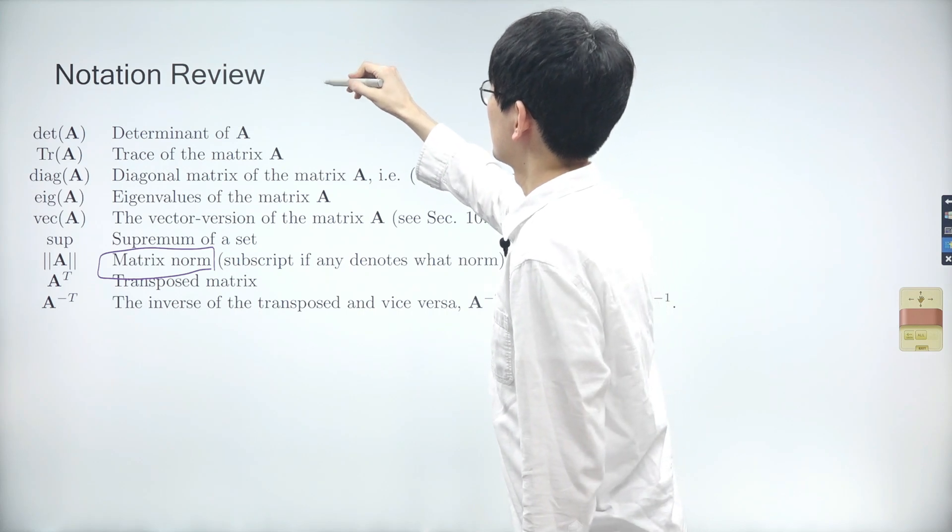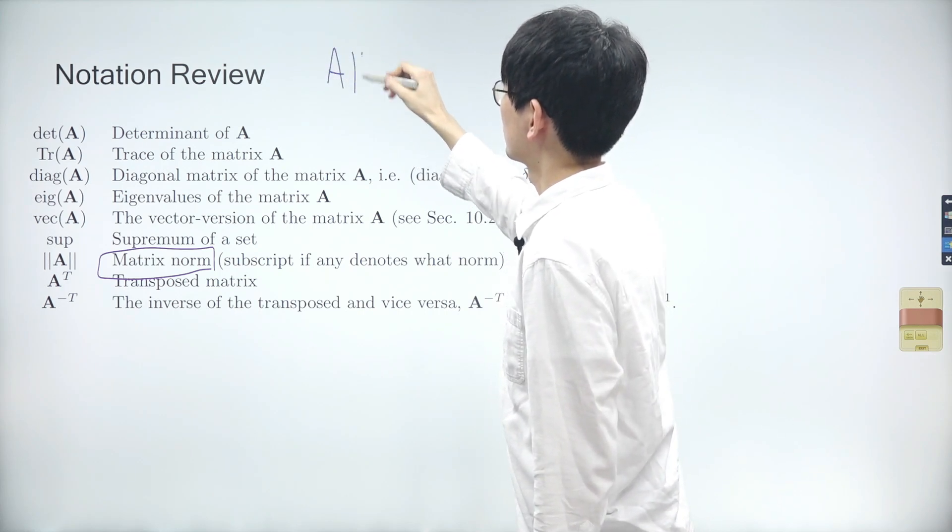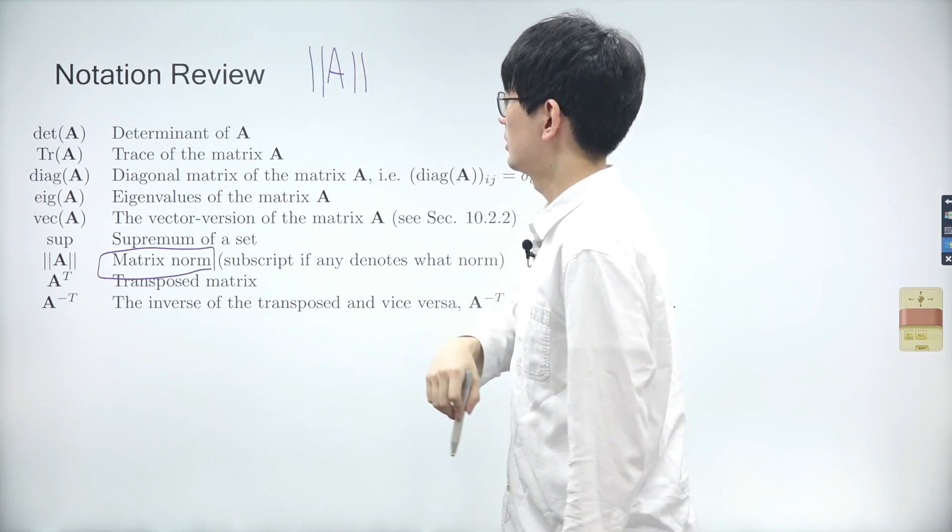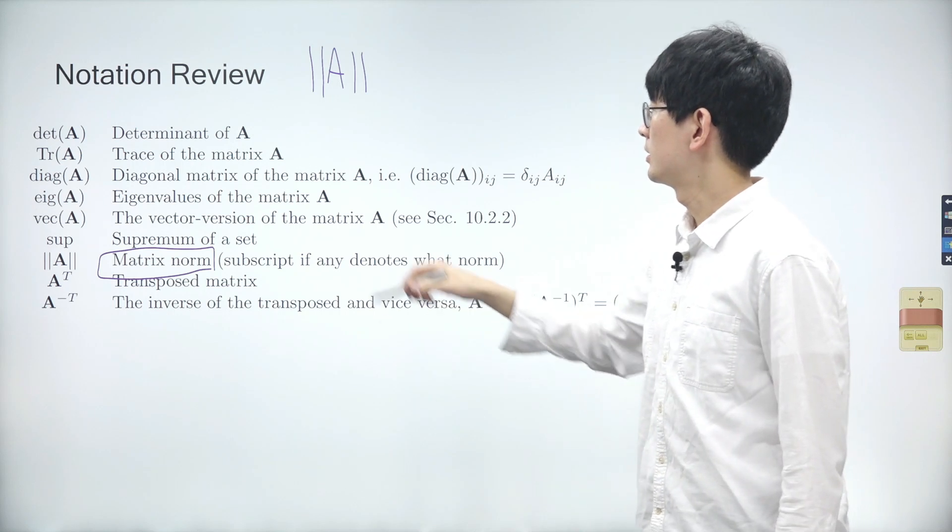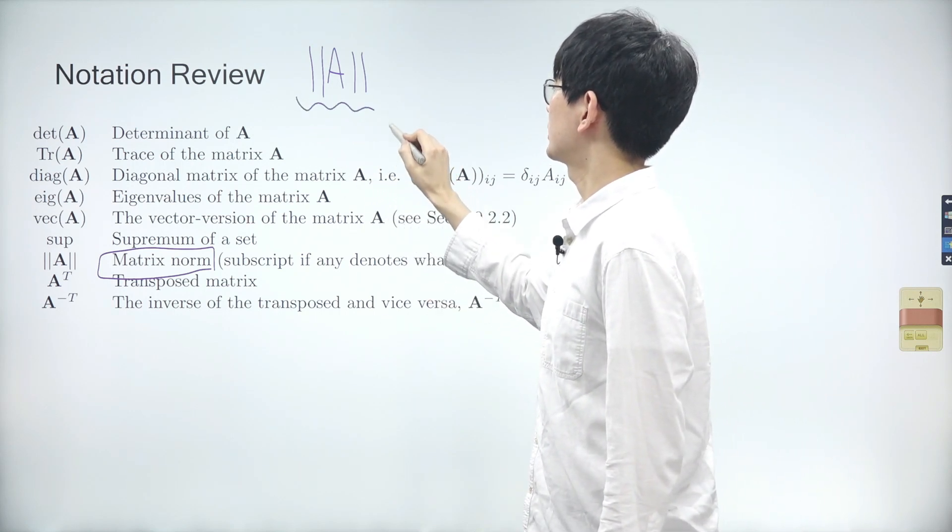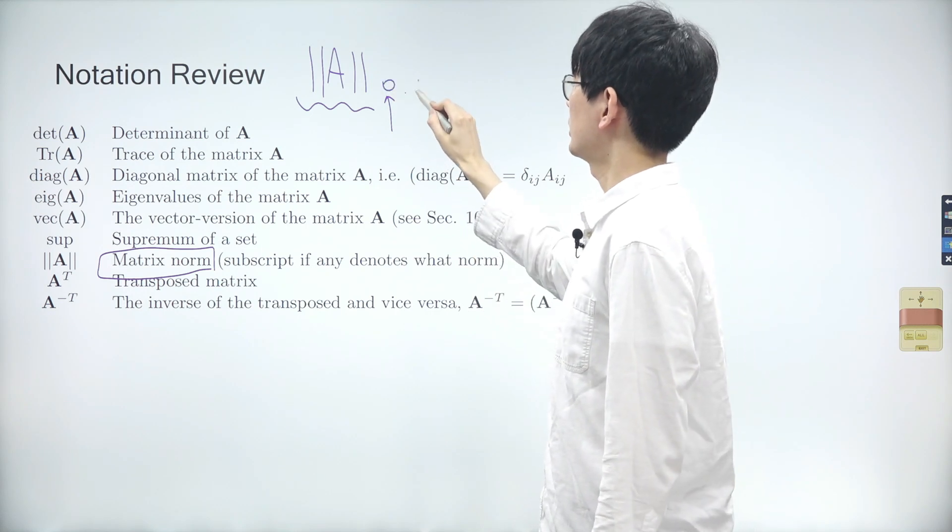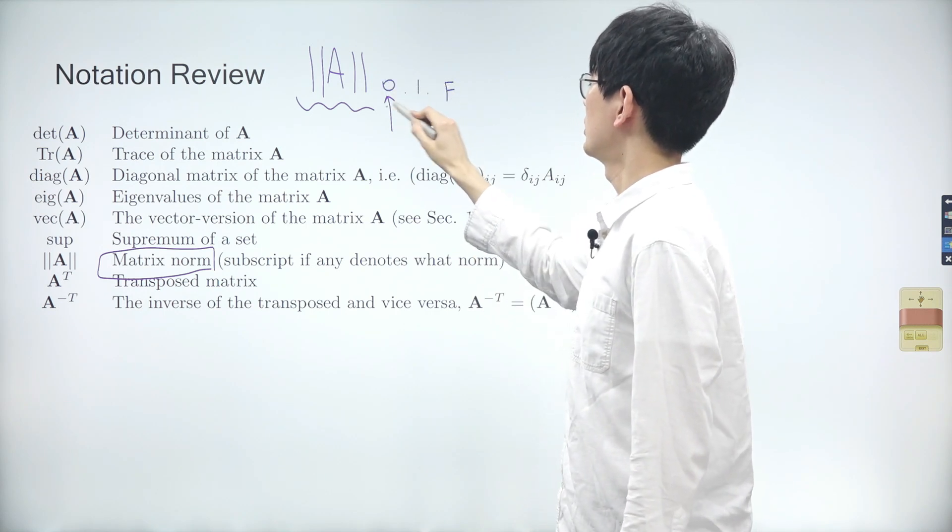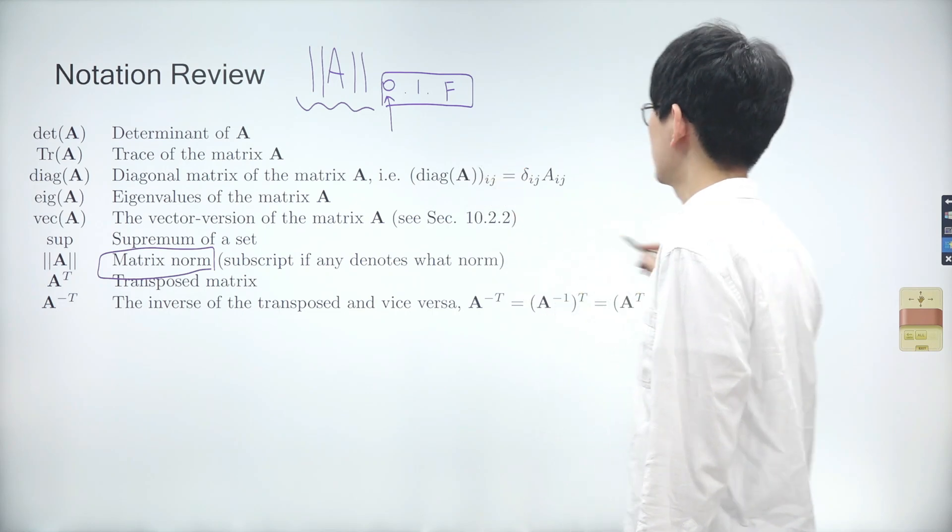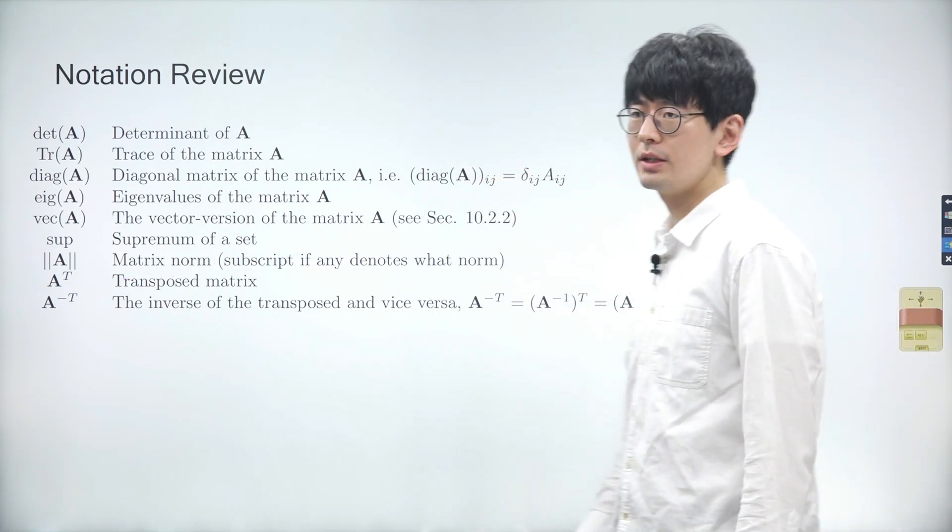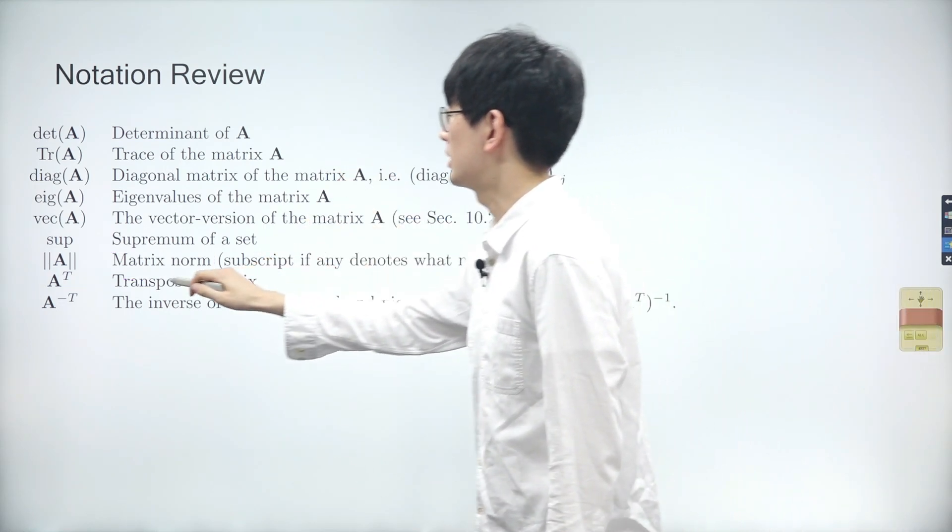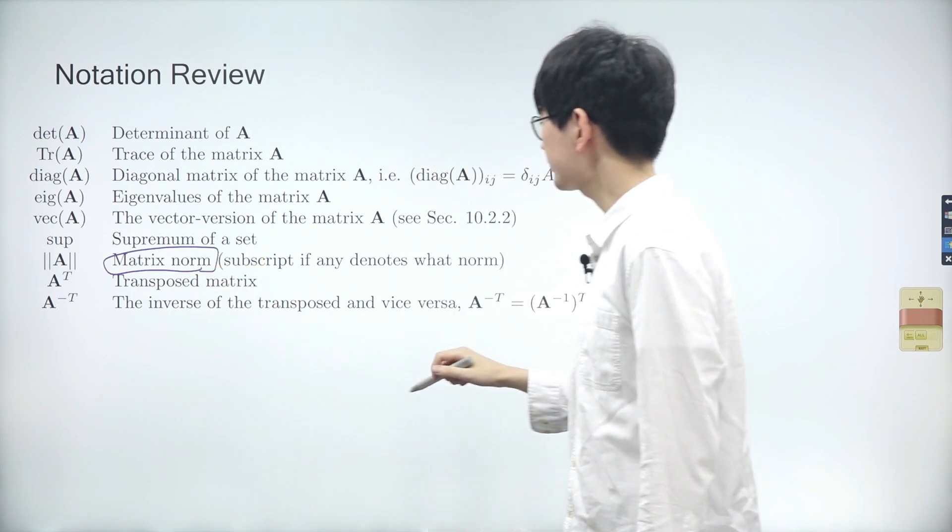A matrix norm literally means the norm of a matrix. However, depending on which values are used as the subscript, the outcome can change significantly. The subscript can be 0, 1, or even F.